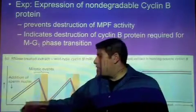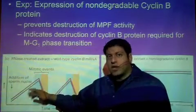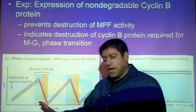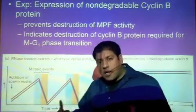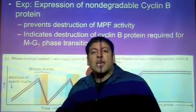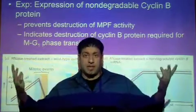Cyclin B gets degraded in anaphase telophase. When cyclin B goes down, MPF activity goes down. When cyclin B is up, MPF activity is up.